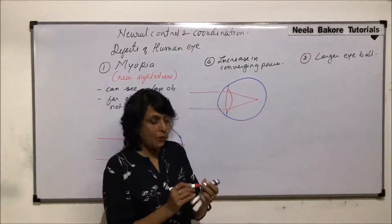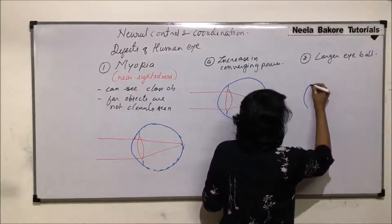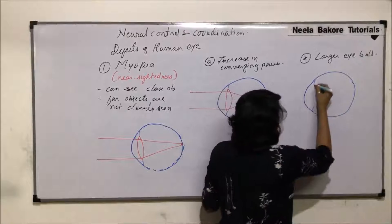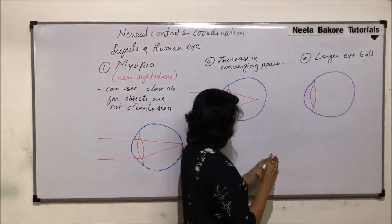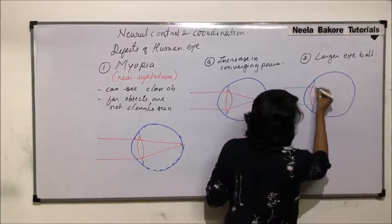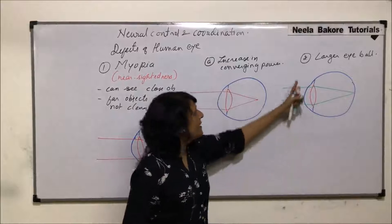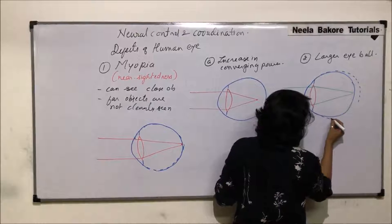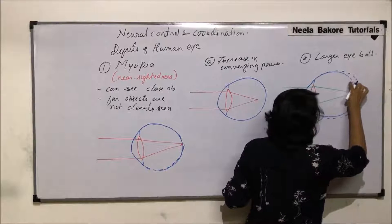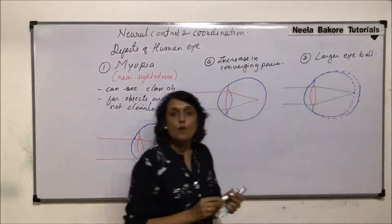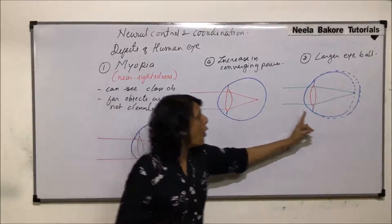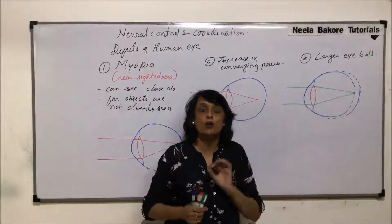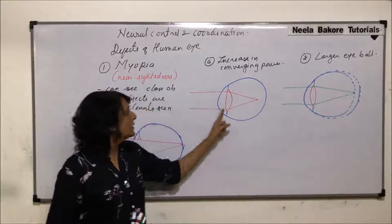The second cause is when the eyeball size increases. Drawing this: here is the normal eye and the lens. The rays fall on the lens — the lens power is normal, no problem. But the eyeball is larger than normal, so the retina is positioned further back. The image would be formed in front of where the retina actually is. So whether it is due to higher convergence power or a larger eyeball, in both cases the image forms in front of the retina.